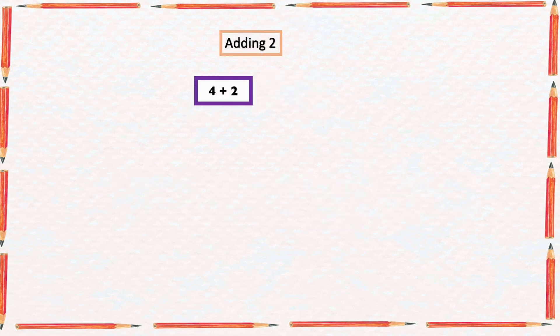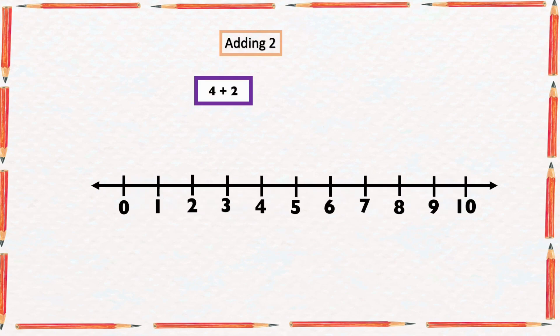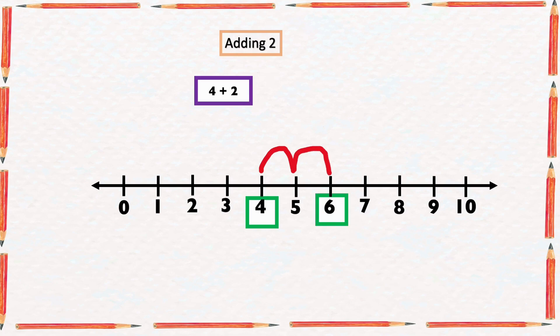Find the sum of 4 and 2 with the help of a number line. We start from the bigger number 4 and count 2 numbers forward: 1, 2. The arrow ended at 6. So the sum of 4 and 2 is equal to 6.